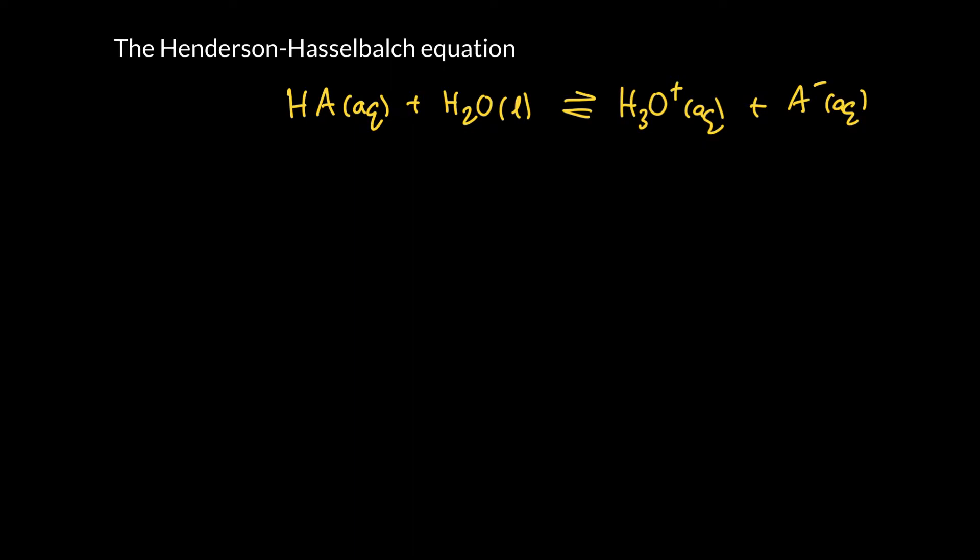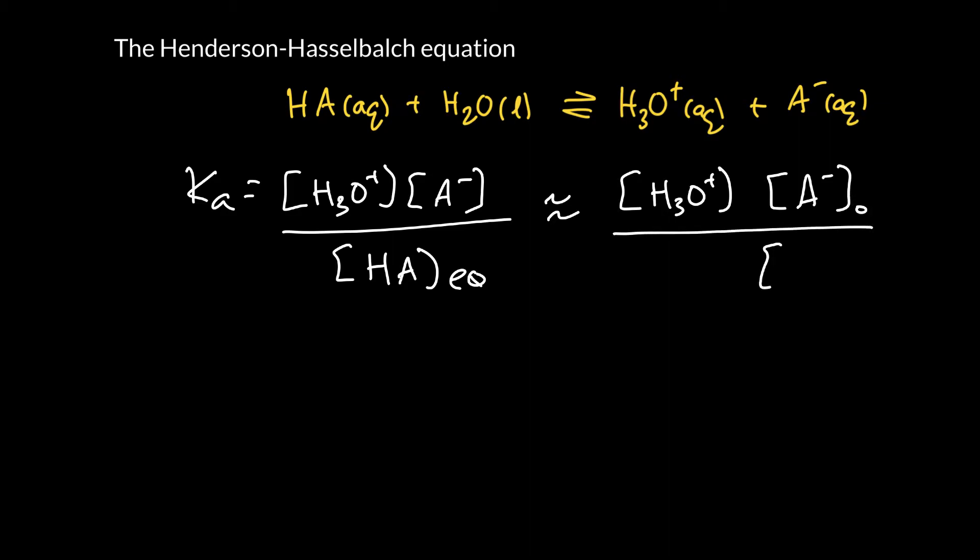So Ka is the concentration of products over reactants. So that is the hydronium times by the A minus, the conjugate base, over the weak acid at equilibrium. And we're going to go ahead and we're going to say that that is approximately equal to the original concentration of A minus and the original concentration of our weak acid.